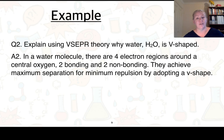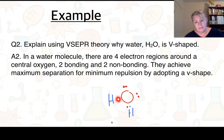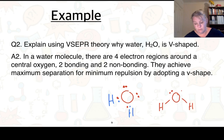The second example is water. The central atom is oxygen, which we draw in with its valence electrons. You can see there are two non-bonding regions and two bonding regions. Drawing the two hydrogens on, this shape is what we call V-shaped — oxygen bonded to two hydrogens with two lone pairs. That's how we get our V-shape: maximum separation for minimum repulsion, which is our VSEPR theory.